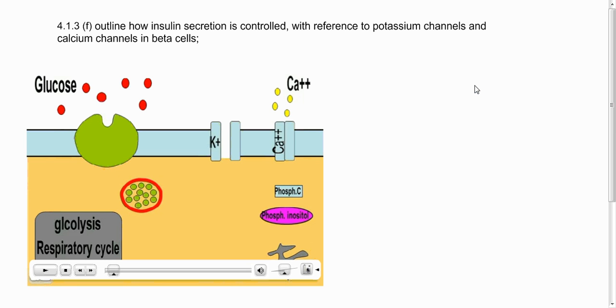This is 4.1.3F and this is dealing with the release of insulin from cells within the pancreas. So we have to outline how insulin secretion is controlled with reference to potassium channels and calcium channels in beta cells.